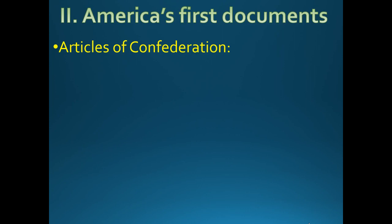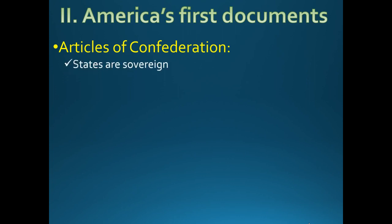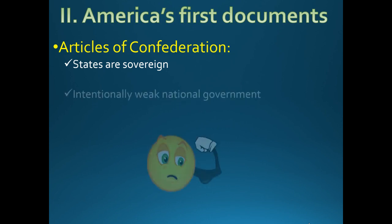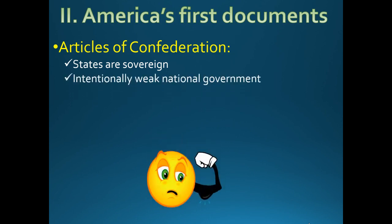It was too weak. It had no executive power to do anything — no power to tax, no power to draft soldiers. It was just a weak piece of junk. It gave too much power to the states — 'sovereign' means all powerful — but it was made that way on purpose because Americans were afraid of a tyrannical government, so they made the national government weak and the state governments strong.